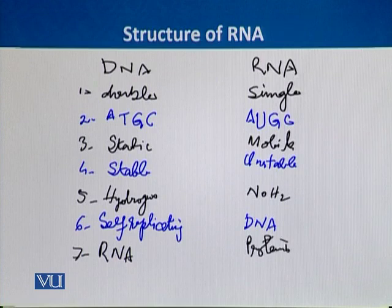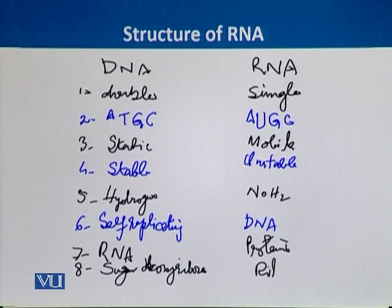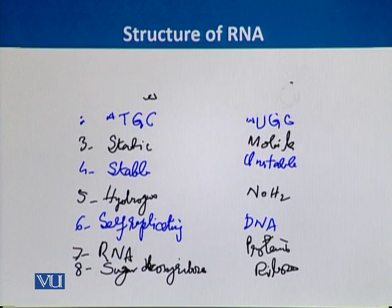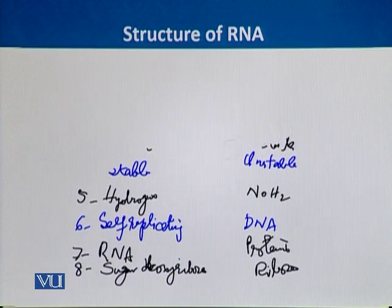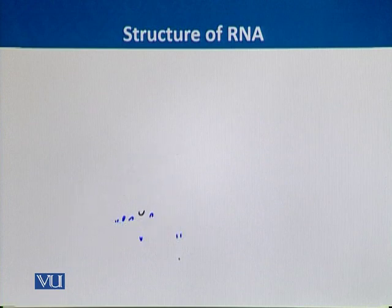The last and most important difference is that of the sugar molecule. In DNA it is deoxyribose sugar, but in RNA it is ribose sugar. So we have seen that there are many differences between DNA and RNA. Regarding the sugar difference — deoxyribose in DNA and ribose in RNA — we have to look at the structure of these sugars to make sense of this difference, as this is the main difference in the sugar-phosphate backbone.